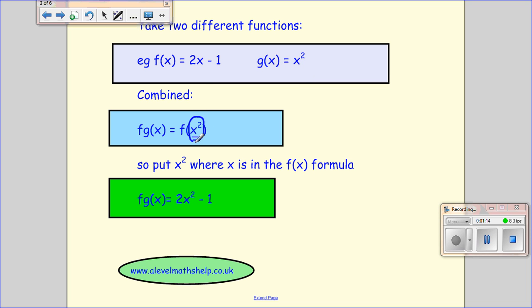So that means that that becomes, wherever you see x in the formula, here you put what's ever inside that bracket. So we get 2x squared minus 1.